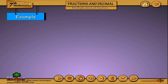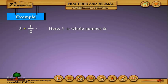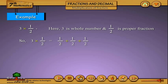Example: 3 into 1/2. Here, 3 is a whole number and 1/2 is a proper fraction. So, 3 into 1/2 equals 1/2 plus 1/2 plus 1/2, which equals (1 plus 1 plus 1) by 2, equals 3/2.